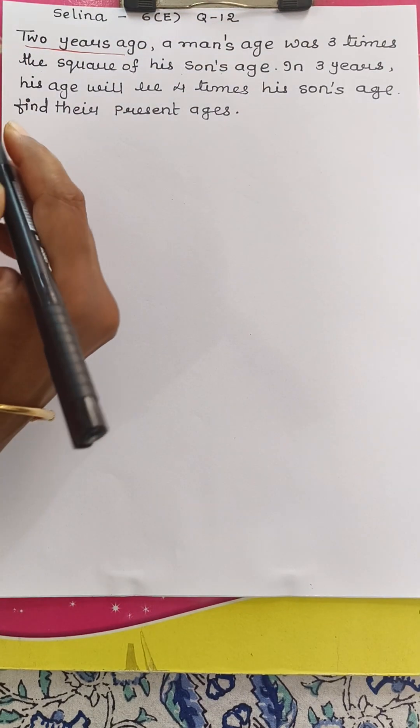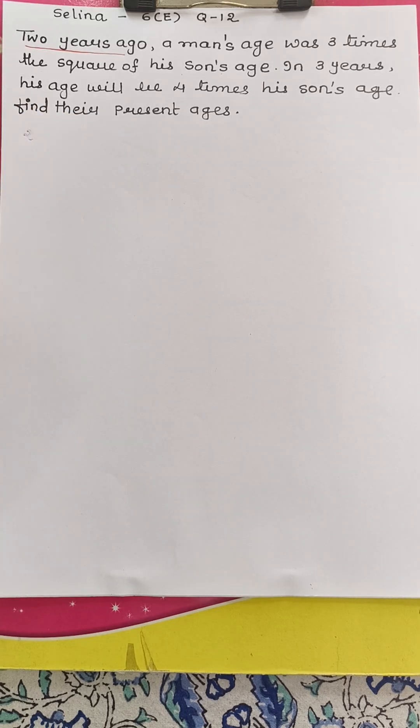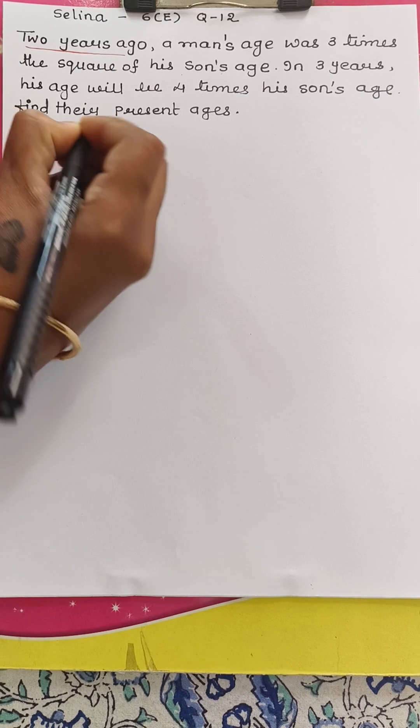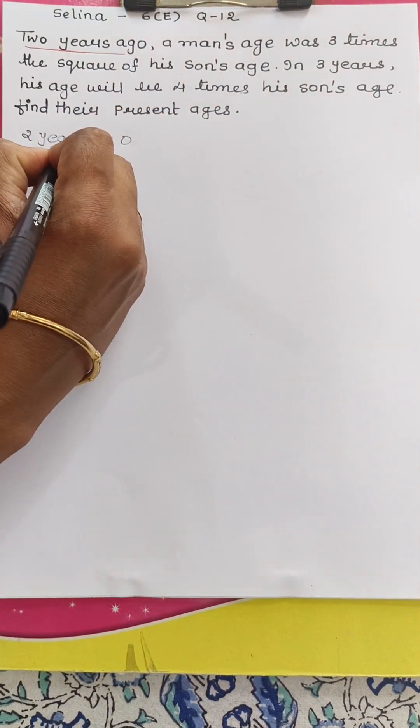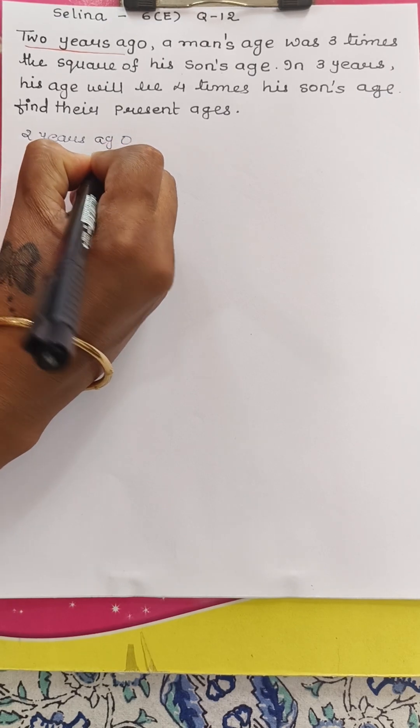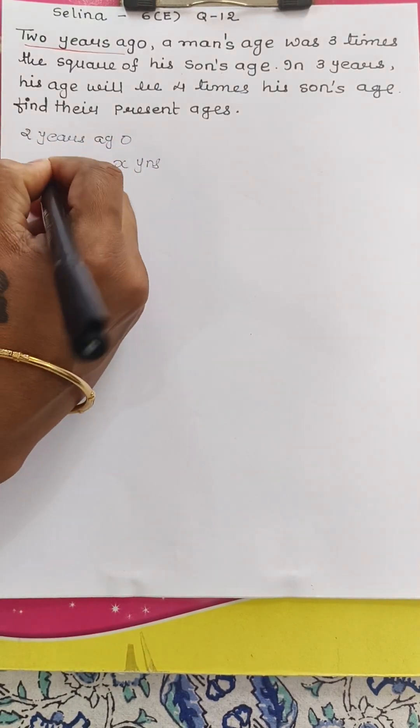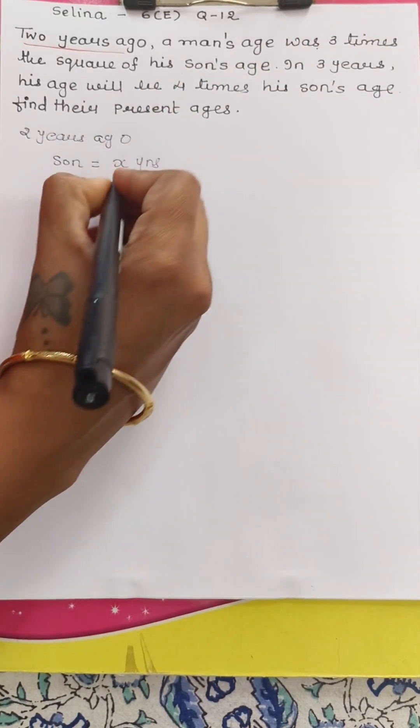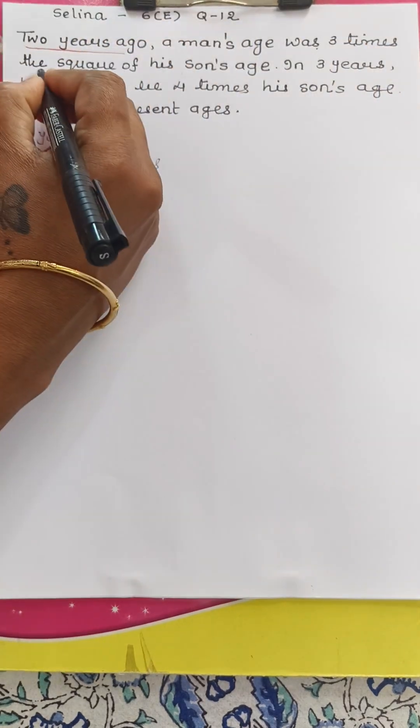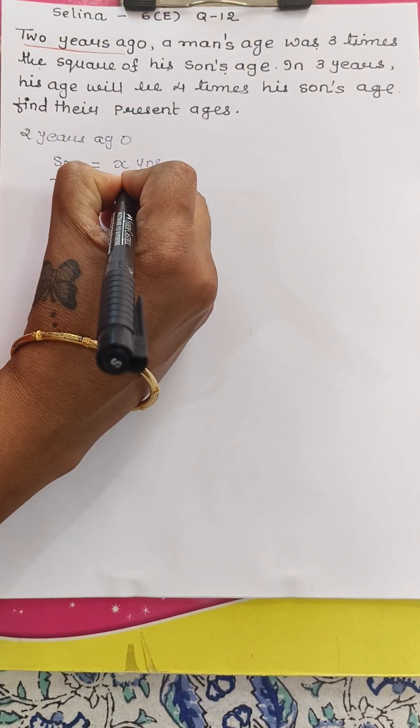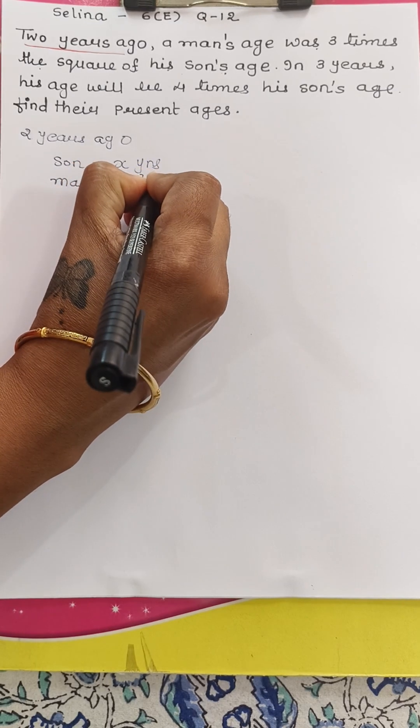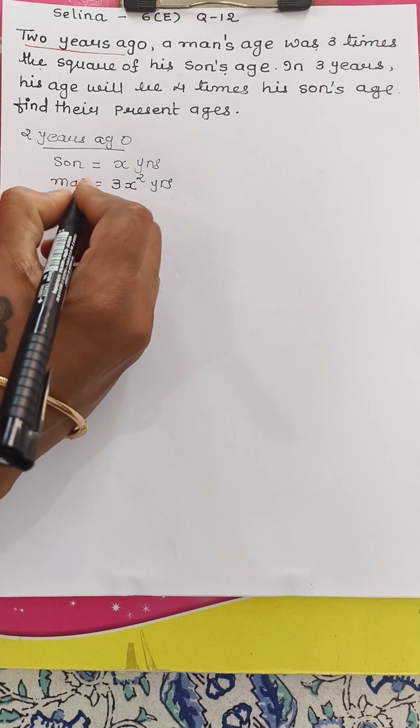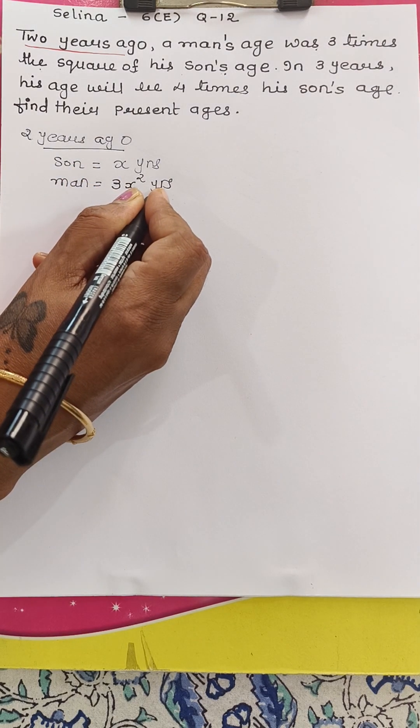So first of all, we will write it down. Two years ago, son was X years old and man was three times the square of his son's age. So two years ago, son was X years old and man was 3X square years old.